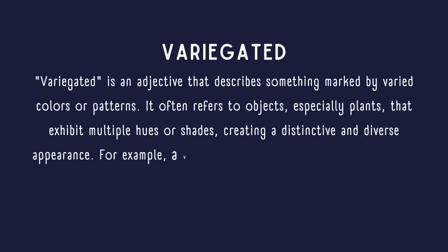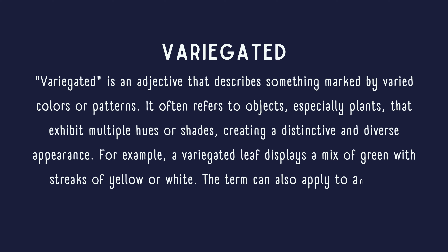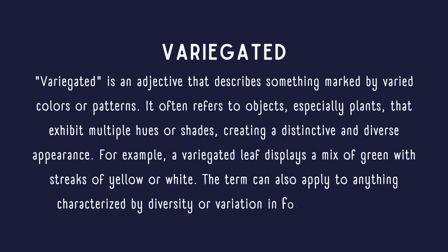For example, a variegated leaf displays a mix of green with streaks of yellow or white. The term can also apply to anything characterized by diversity or variation in form or appearance.